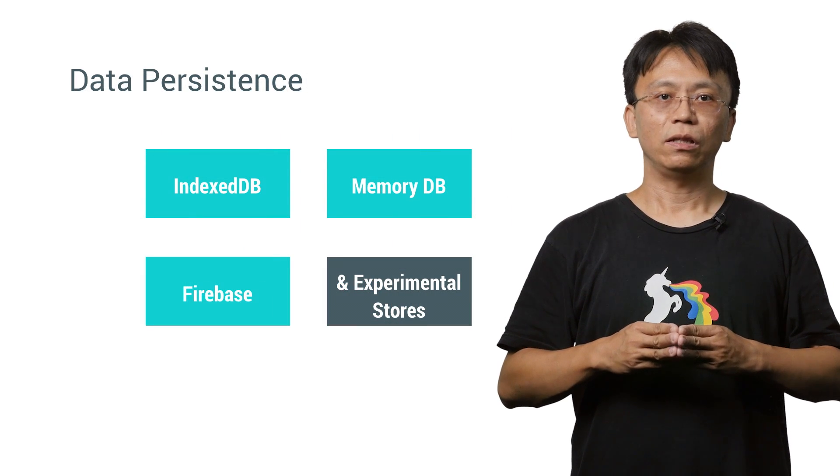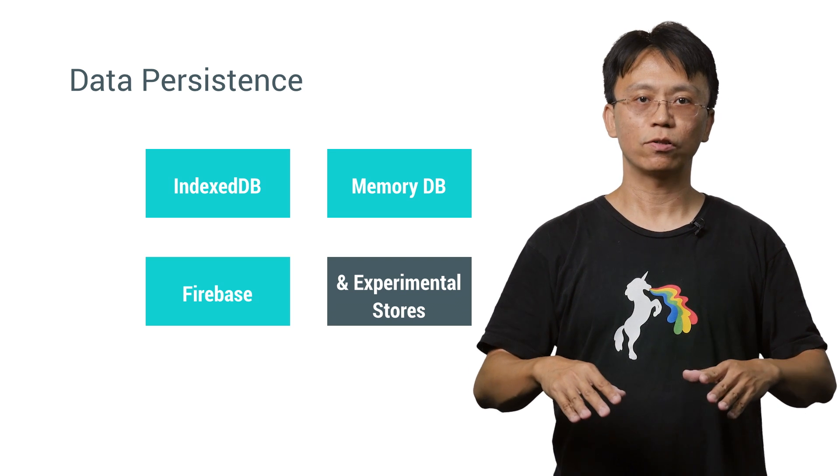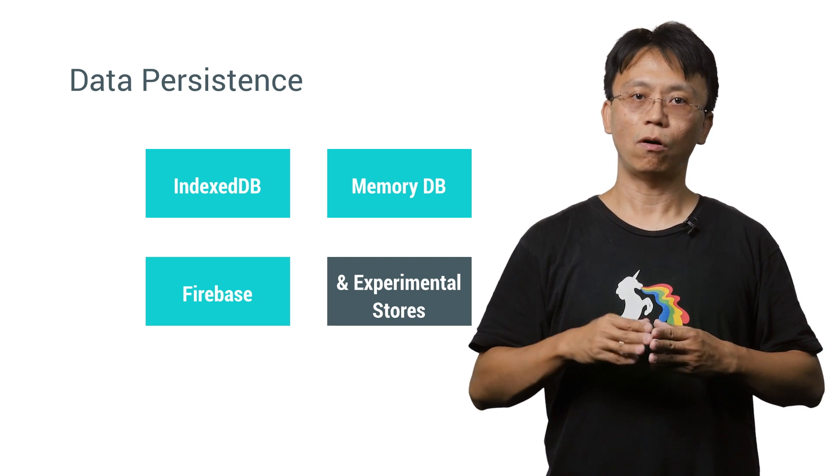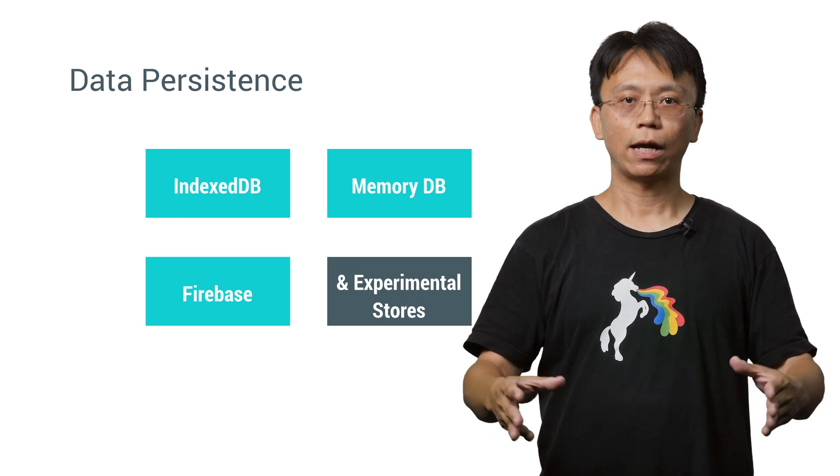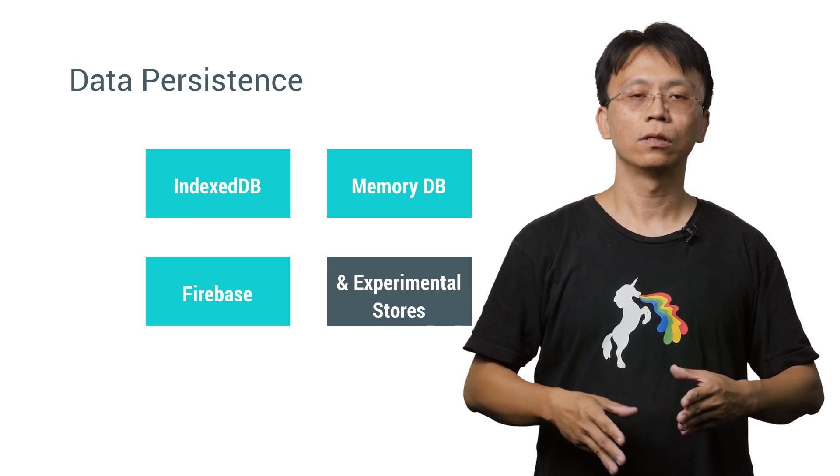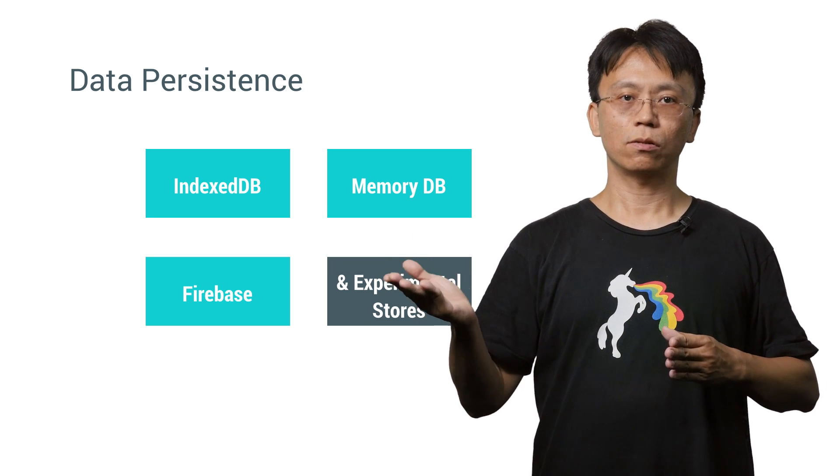Lovefield makes persisting data inside the browser much easier. Persisting data inside the browser is useful when the user goes offline and want to use the app, or to improve the app loading experience by using local cache before the server data returns. Lovefield by default uses IndexedDB as persistent storage.